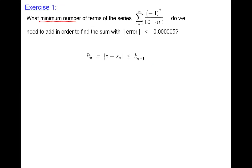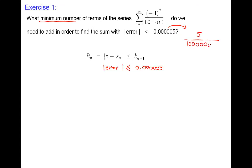We have to find a term that satisfies our inequality. I will rewrite 0.0000005 as a fraction: five divided by one million, which simplifies to one over 200,000. So the size of the error must be less than one over 200,000. Looking at this alternating series, B sub n is one over 10 to the power of n times n factorial. Let's compute: B sub one is one over 10 — much greater than one over 200,000. B sub two is one over 200 — still greater. B sub three is one over 6,000 — the denominator is still less than 200,000.